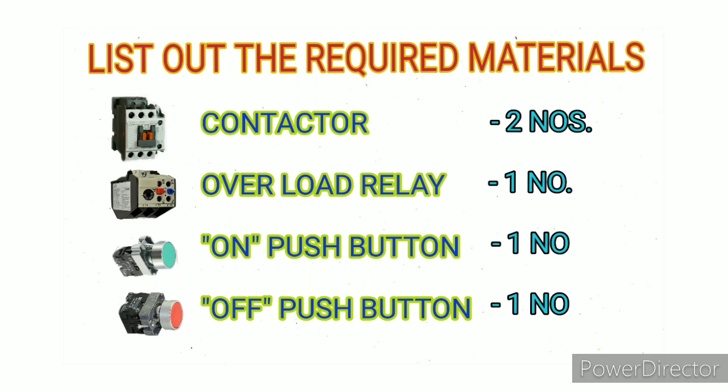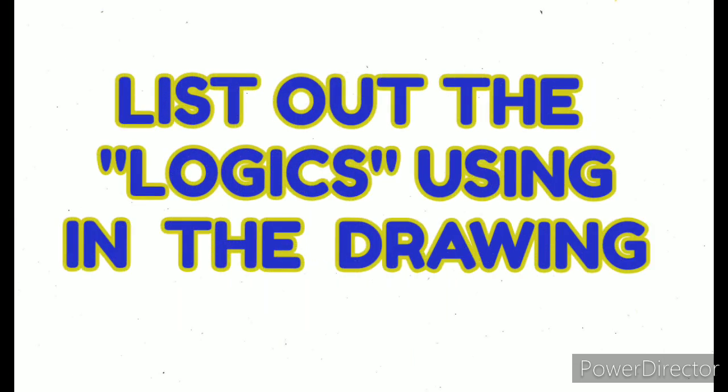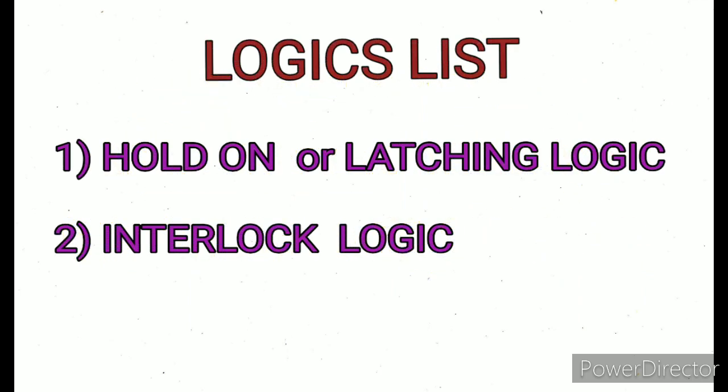Next step, we need to list out the logics using in the drawing. We are using two types of logics: hold on or latching logic. Next one is interlock logic. The hold on logic is commonly used in starter diagrams. Interlock means at a time only one contactor needs to pick up. If forward is working, at that time reverse is not allowed to work. This is called interlock logic.